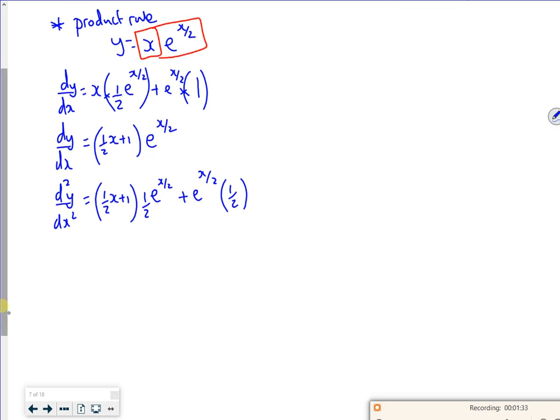So what can I do? If I can tidy it in there, I can take out the e as a common factor. I've got a half times out, so I've got a quarter x plus a half.